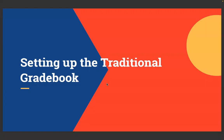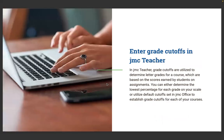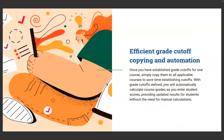We'll start by setting up the traditional grade book by entering grade cutoffs. In JMC Teacher, grade cutoffs are utilized to determine letter grades for a course based on the scores earned by students on assignments. You can either determine the lowest percentage for each grade on your scale or utilize default cutoffs set in JMC Office to establish grade cutoffs for each of your courses.